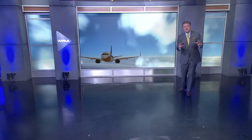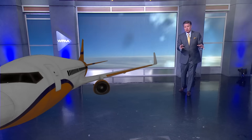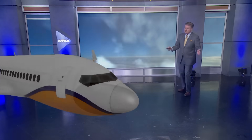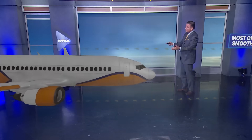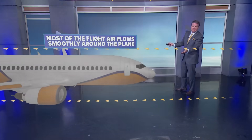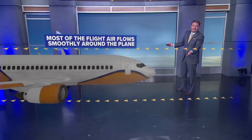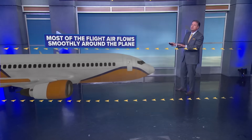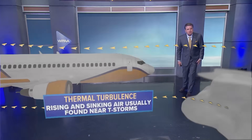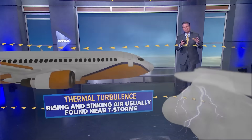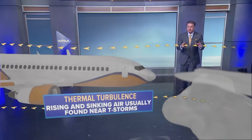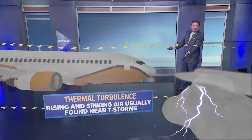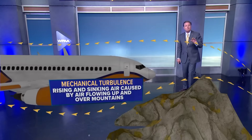I want to explain the different types of turbulence and how all of this occurs. Typically, most of the flight, you have air that flows smoothly around the plane — no issues. But we have what we call thermal turbulence, which is rising and sinking air usually found near thunderstorms.